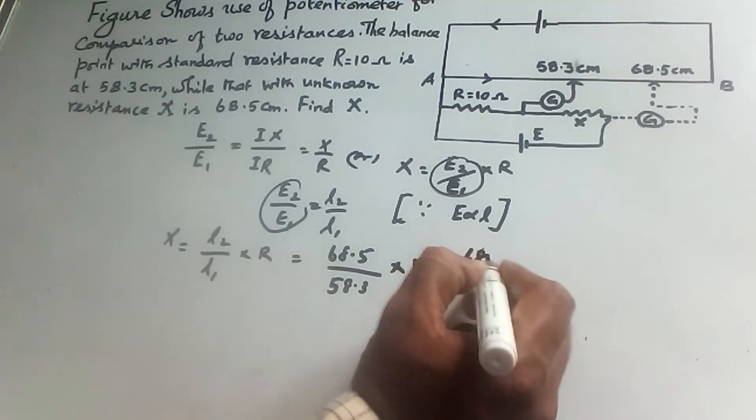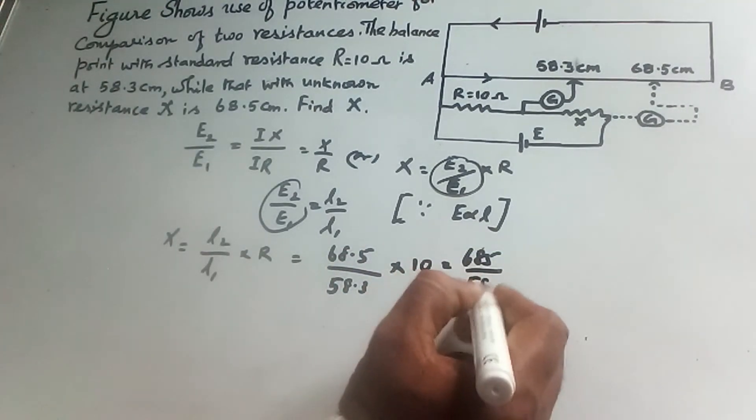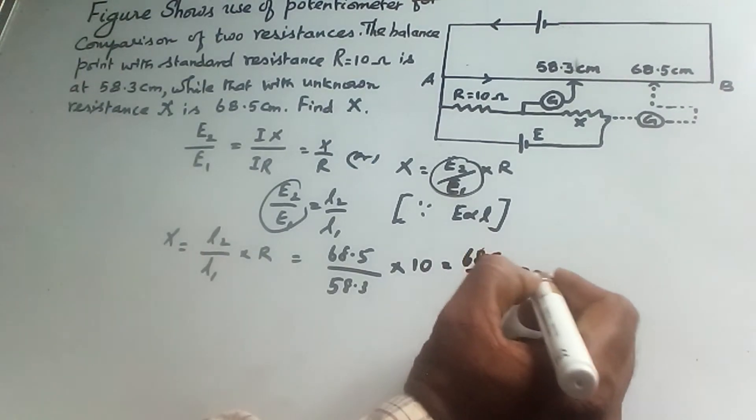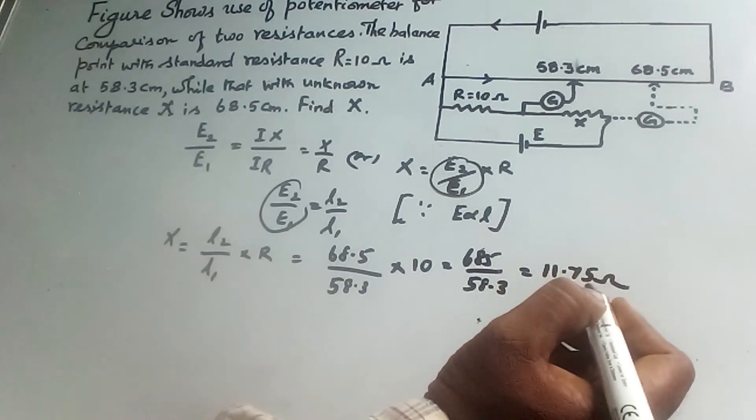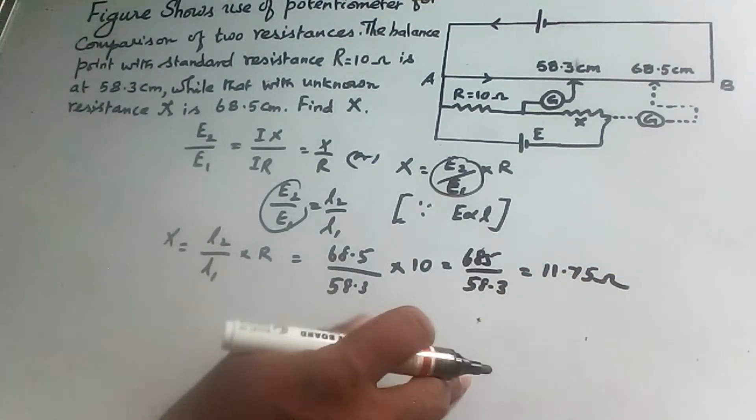We can get 68.5 by 58.3, which is almost equal to 11.75 ohm. So the value of x is 11.75 ohm.